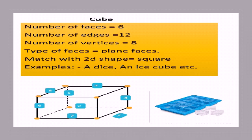A cube has 12 edges. And here there are 8 vertices — the yellow points indicate the vertices. All faces are square-shaped, and all edges are of equal length. The faces of a cube are matched with squares.